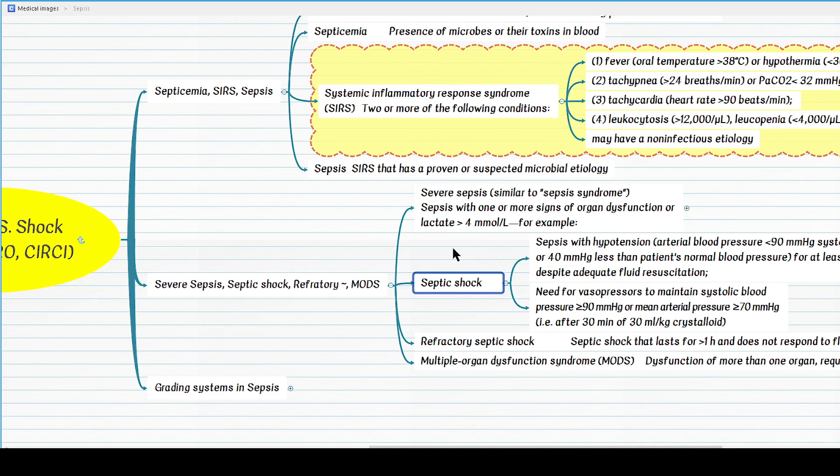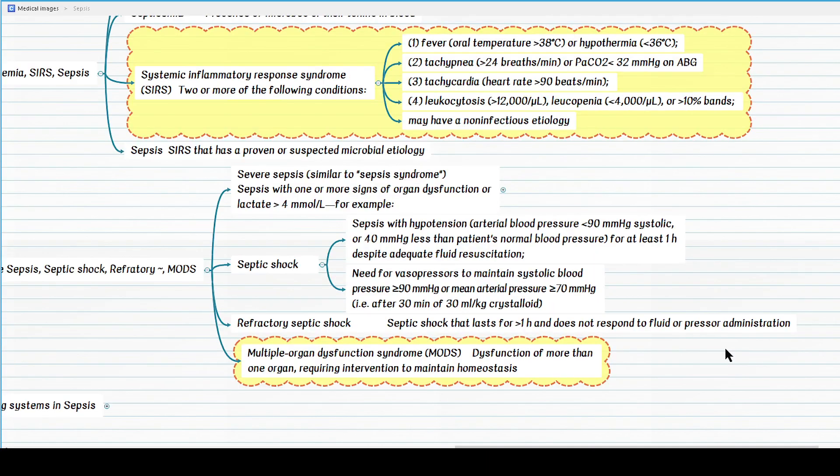Then finally we have the multiple organ dysfunction syndrome or MODS. What is the definition of MODS? Any patient who has dysfunction of more than one organ who requires intervention to maintain homeostasis and clinical stability is said to be in MODS.